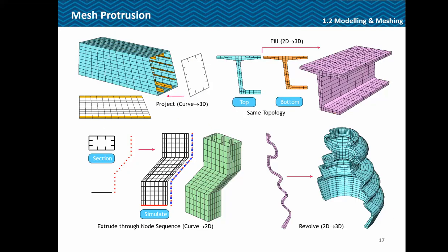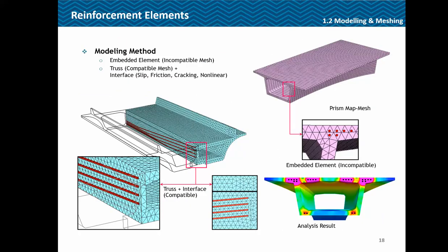If you have already meshed the geometry and want to create a 3D mesh from that, it can also be done. A 2D or 1D line mesh can be extruded into a 3D mesh. Similarly, 2D meshed faces can be filled or extruded. A 2D mesh can be extruded along any path or it can be revolved to finally obtain your 3D mesh.